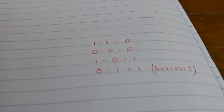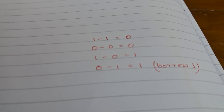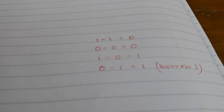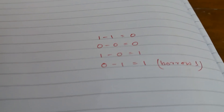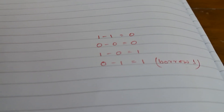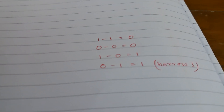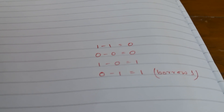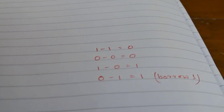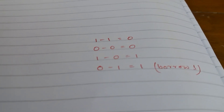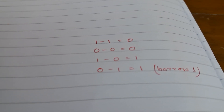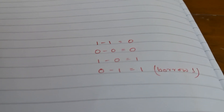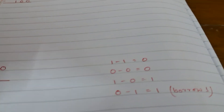How to subtract in binary — that is, how to subtract two binary numbers. We know the rules: 1 minus 1 equals 0, 0 minus 0 equals 0, 1 minus 0 equals 1, and 0 minus 1 equals 1, which is possible only when we borrow 1 from the previous place value. If we take these as rules, this arithmetic is as easy as normal arithmetic. We will learn this as normal arithmetic.